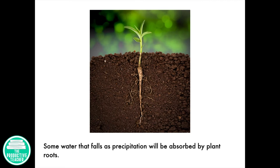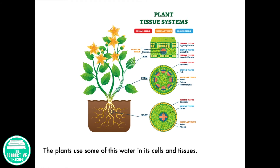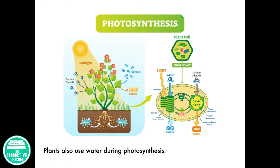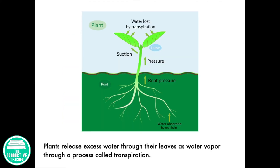Some water that falls as precipitation will be absorbed by plant roots. The plants use some of this water in their cells and tissues. Plants also use water during photosynthesis.